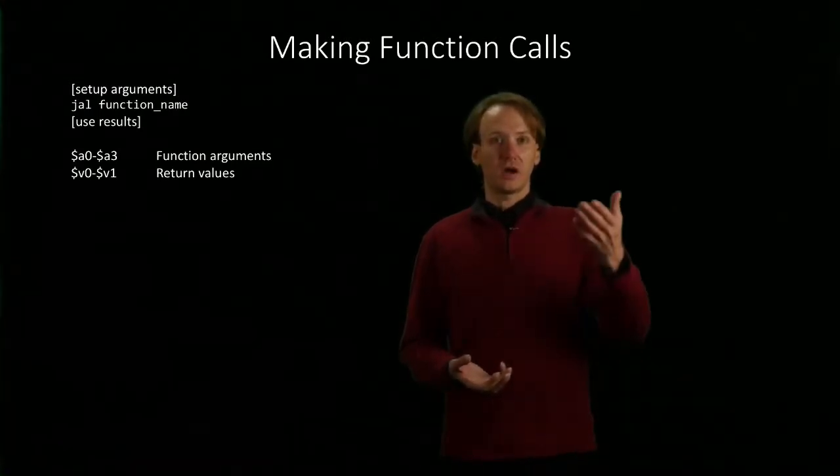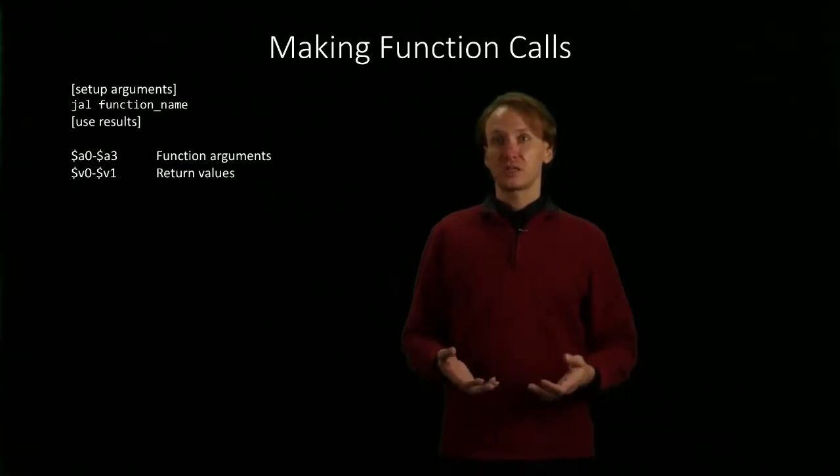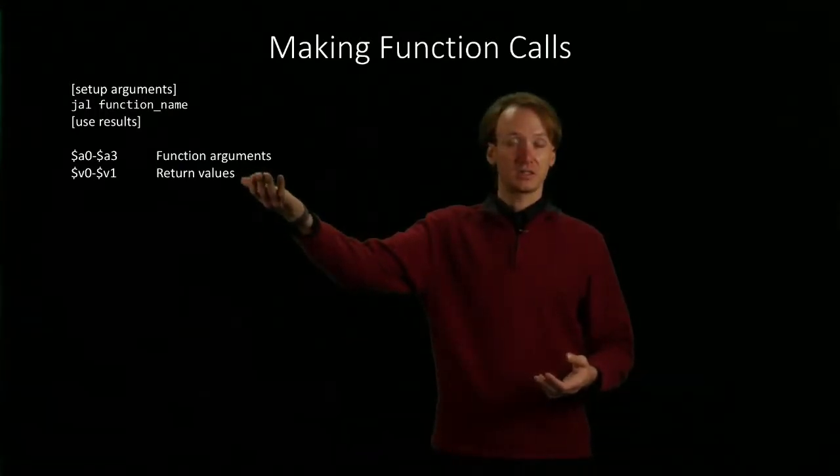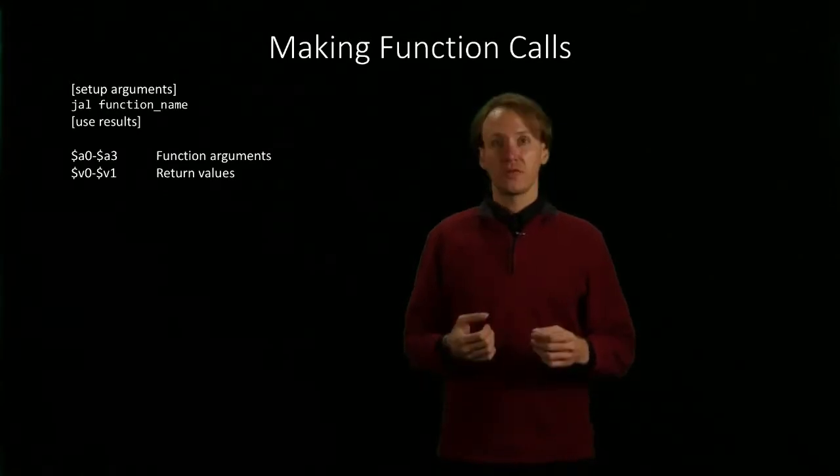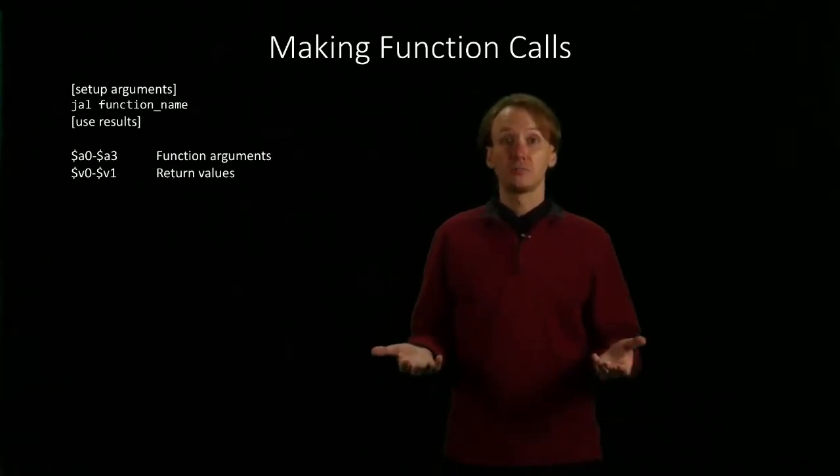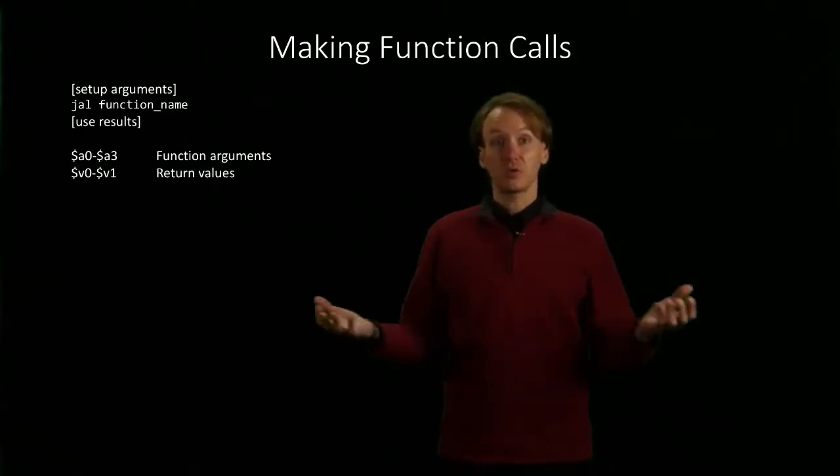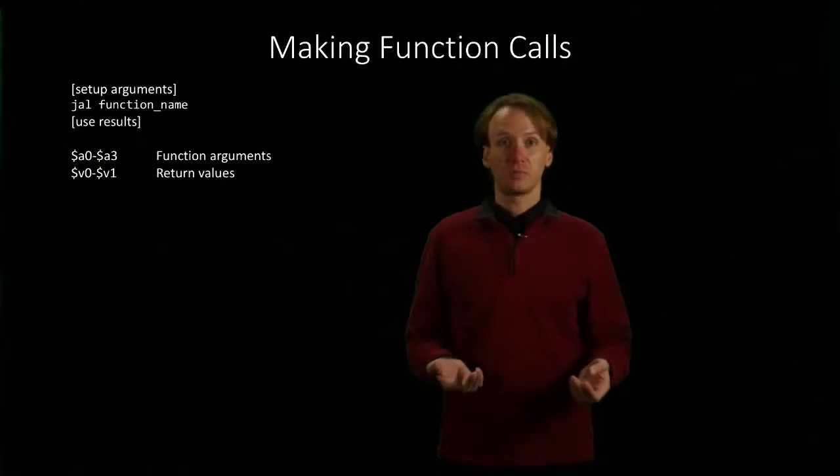First, we'll have to get the values of b and c, and we're going to put them into registers. In this case, we're going to put those into, say, registers a0 and a1. If I have more parameters, I can put them in a2 or a3. If I have less, I wouldn't use a1. If I don't have any parameters, then I just don't use any of the argument registers at all.